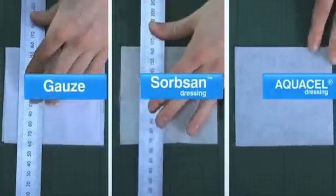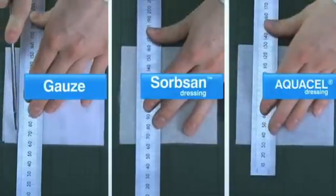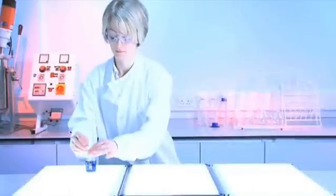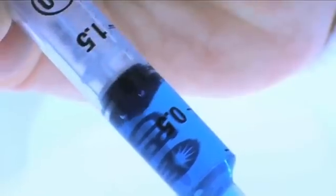We cut a 1.5cm x 10cm sample from each product in the machine direction. For the gauze, four layers are cut together to be comparable to Aquacel dressing and Sorbzan.